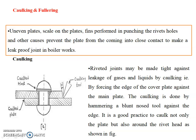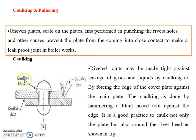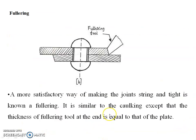A riveted joint may be made tight against leakage of gases and liquids by caulking — by forcing the edge of the cover plate against the main plate. This caulking is done by hammering a blunt-nosed tool against the edge. It is good practice to caulk not only the plate but also around the rivet, as shown in the figure.